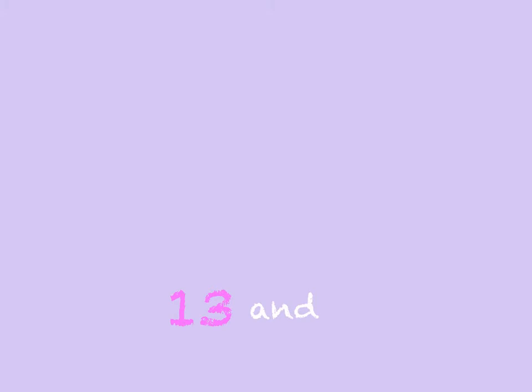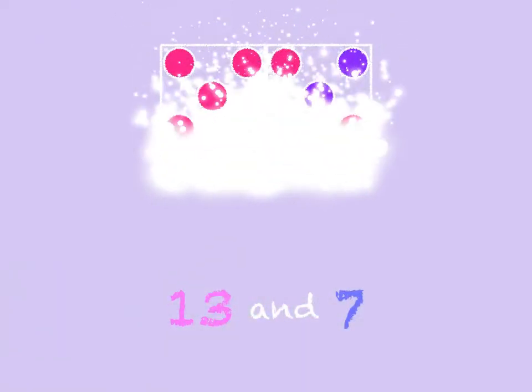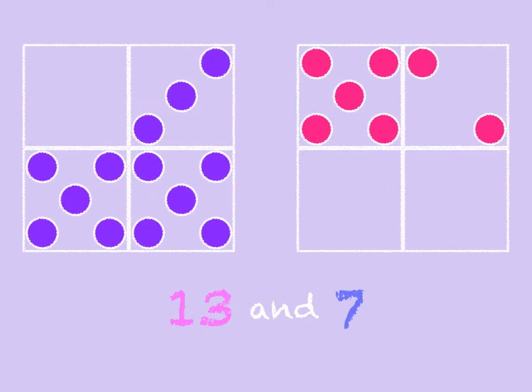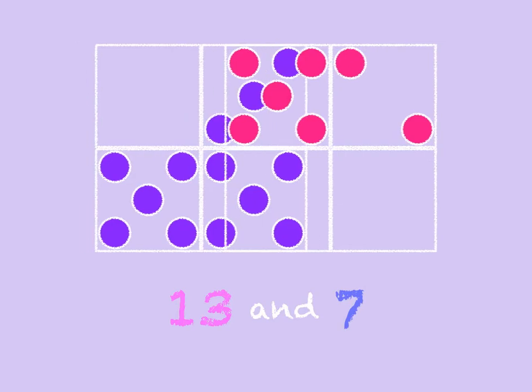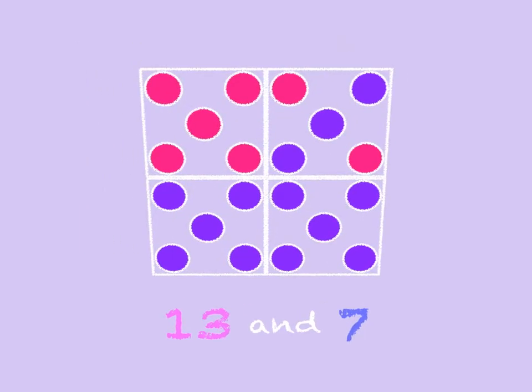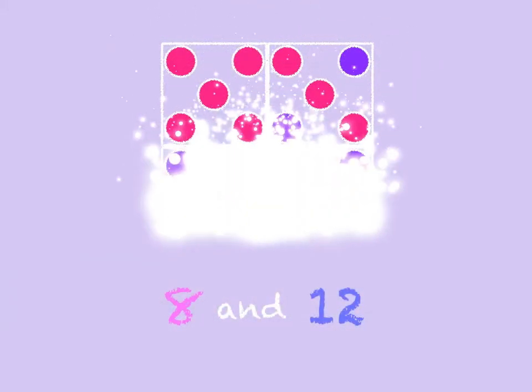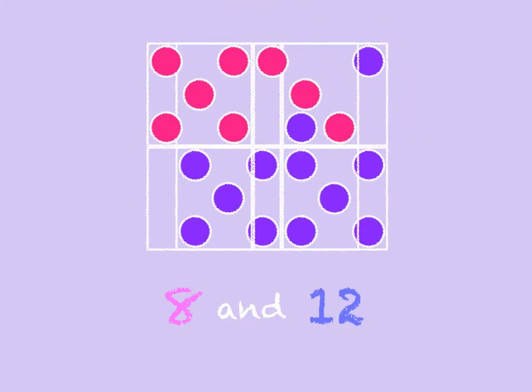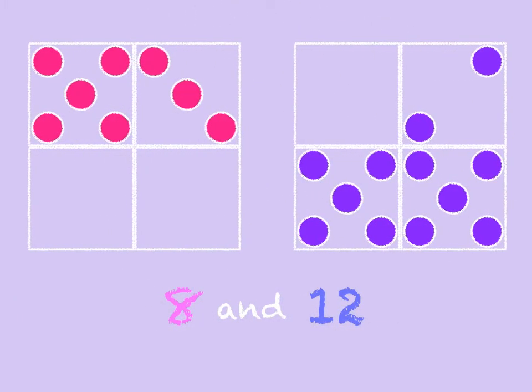Thirteen and seven. Thirteen and seven make twenty. Eight and twelve. Eight and twelve make twenty.